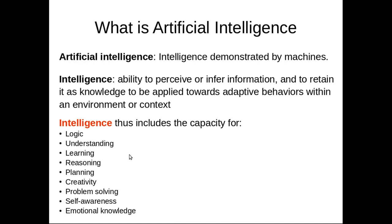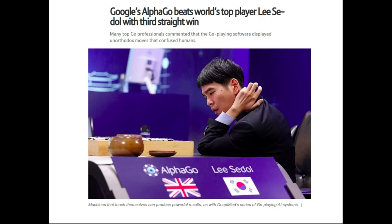This is a short definition of artificial intelligence. In a later class we will go through a more formal definition of AI. Now to talk about success stories in AI, we all know about AlphaGo. Go is a strategy game.